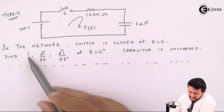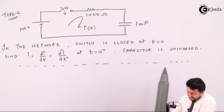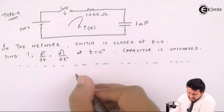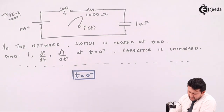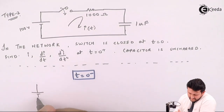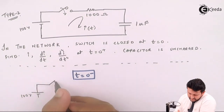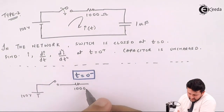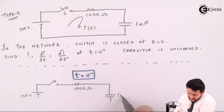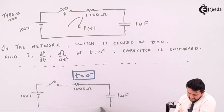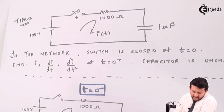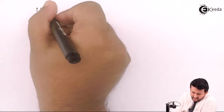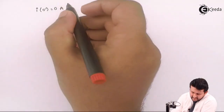In this case we need to find current i, di/dt, and d²i/dt² at t=0. Let's split this into three stages. The first stage is at t equal to 0 minus, meaning the switch is open. The circuit is 100 volts in series with a 1000 ohm resistance and a 1 microfarad capacitor. Since the switch is open, there is no closed path, so the current i(0) equals 0.